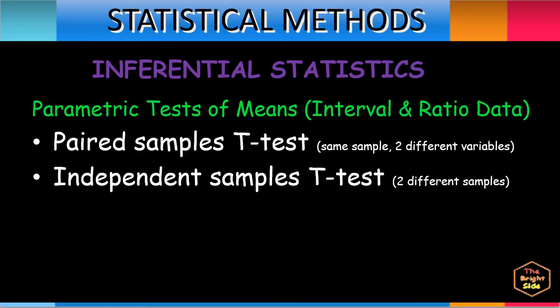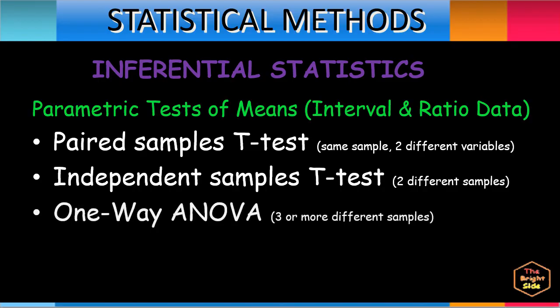Next is the one-way ANOVA, which stands for analysis of variance. This compares means across three or more groups. This test concludes whether the mean of three or more independent groups is varied, and it will show the difference between more than two data groups.